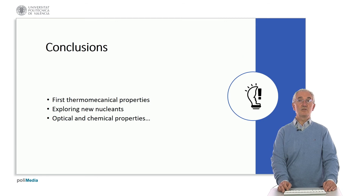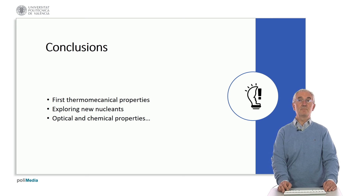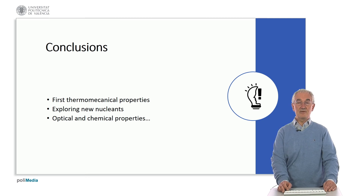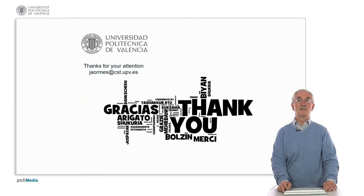And this is all that I want to say. Just remember: the first thermomechanical properties were the basis for glass ceramics. Now, with new nucleators, we have optical, chemical, and electronic properties which are greatly developing the application of glass ceramics. Thank you very much for your attention.